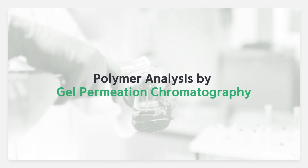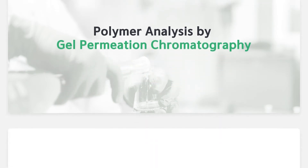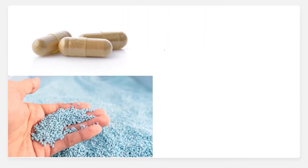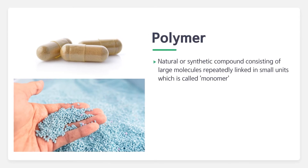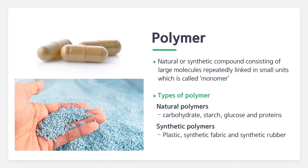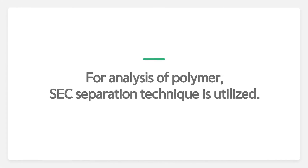Let's learn how to analyze polymers with gel permeation chromatography. Before getting into it, what is a polymer? A polymer is a natural or synthetic compound consisting of large molecules in which small units are repeatedly linked. Polymers can be classified into two types based on how they were made: natural polymers and synthetic polymers.